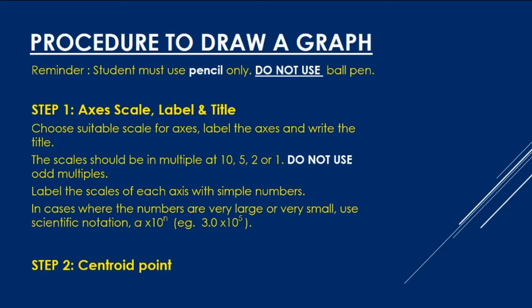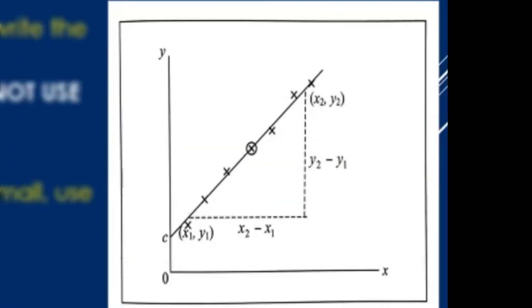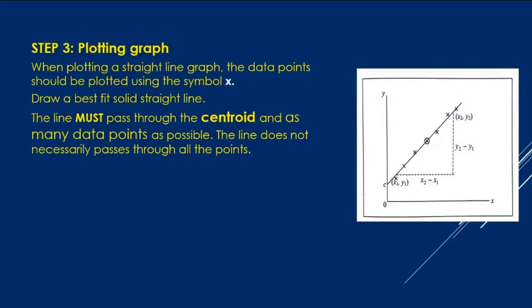Step 2: Centroid point. Mark your centroid point with symbol X around with the circle when plotting the centroid. For example like this. The diagram shows that the centroid is plotted like this.